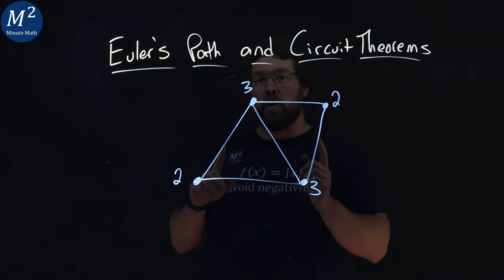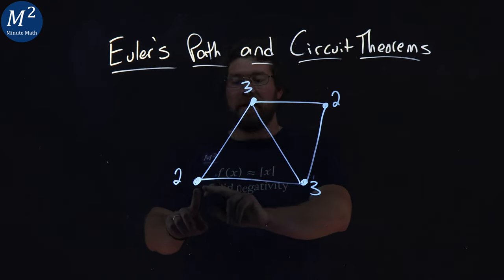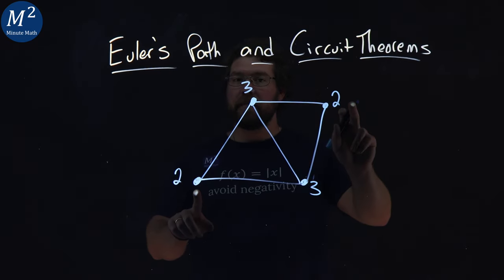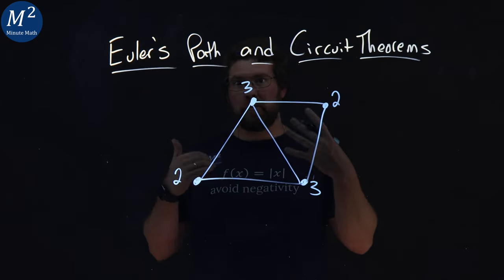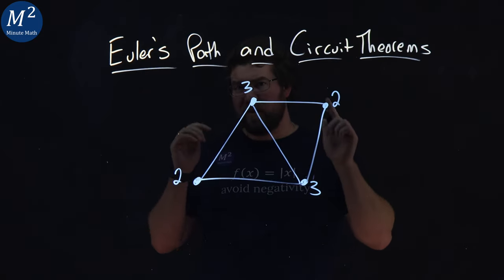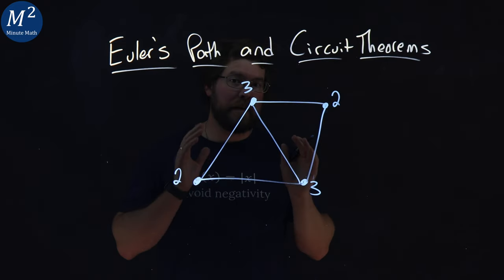But we can still have an Euler Path because we have even degrees right here. And then we have two odd degrees and it's at most two odd degree vertices, we're still good there. So an Euler Path exists.